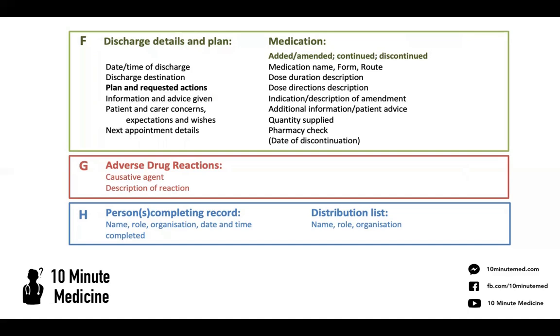Finally, any information and advice given. So if we've informed the patient to start a low sodium diet or a low potassium diet, that's something you want to make clear. You'd write 'patient has been advised to be started on' and so forth.